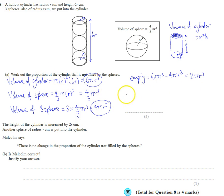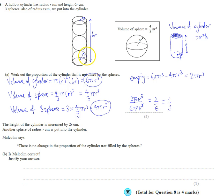Since we want a proportion, let's write it as a fraction: the empty space is 2 pi r cubed divided by the total space in the cylinder, 6 pi r cubed. The r cubes cancel and the pi's cancel, leaving 2 over 6, which simplifies to one third. So the spheres take up two thirds of the space and the empty space is one third.